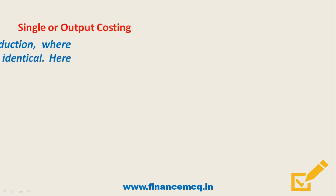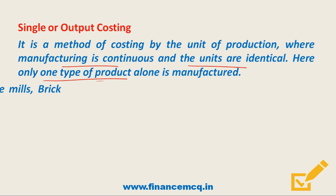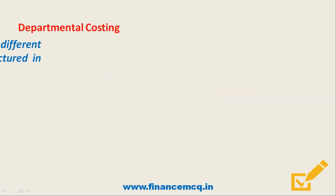Next is single or output costing. In this method, manufacturing is continuous and the units are identical — only one type of product is manufactured. The units may differ in terms of size, shape, or quality. This method is called single costing because only one type of product is manufactured. Examples include paper mills, textile mills, brick making, cameras, pencils, and dairy products.